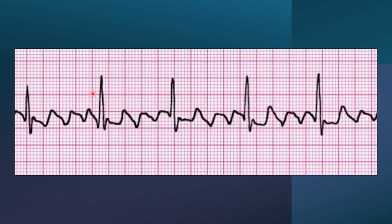If we look at our rules of interpretation, we have a PR interval that's less than 0.2 seconds, but there are multiple P waves again, so there is a significant abnormality. The P waves, even though there's a run of three of them, they do match up with the QRS complexes — three on each one. So if we were to turn this EKG around and try to cut it with a tree, it kind of almost represents a saw, and that's a clear indication of atrial flutter.